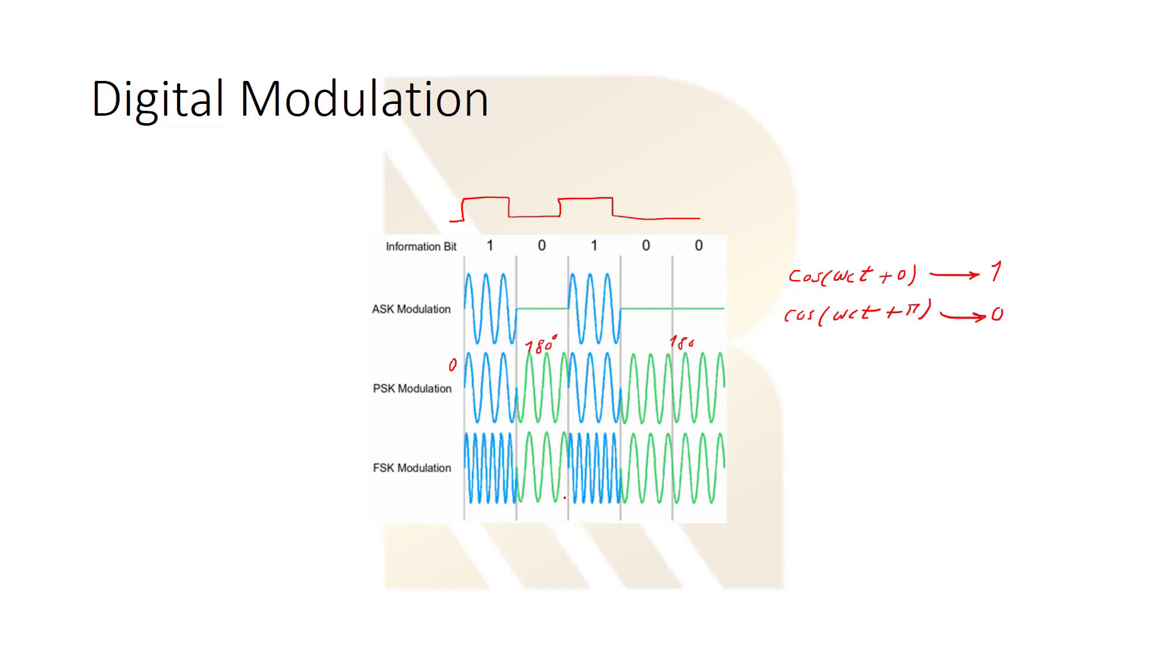For FSK modulation, we have two different frequencies. This is F1 and this is F2. Here F1 is higher than F2, but it's not necessary; it can be reversed. So when we have data 1, we send F1, and when we have data 0, we send F2.